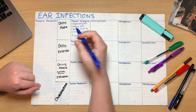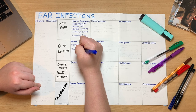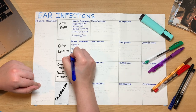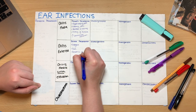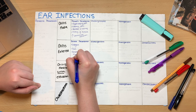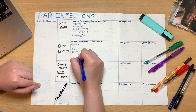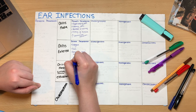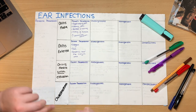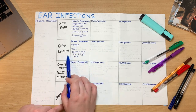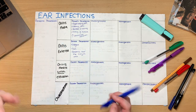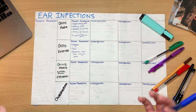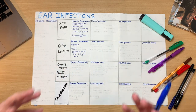We then move on to otitis externa. This is an infection of the outer ear canal between the auricle and the tympanic membrane. For this presentation, it is common to see itchiness of the ear canal, pain and tenderness over the tragal area or the auricle itself.